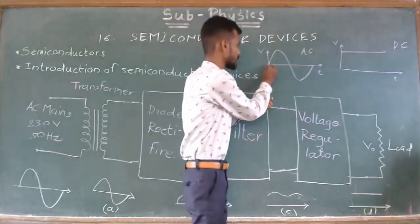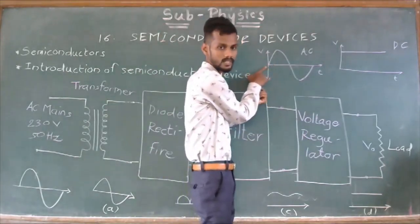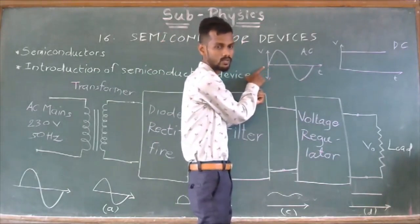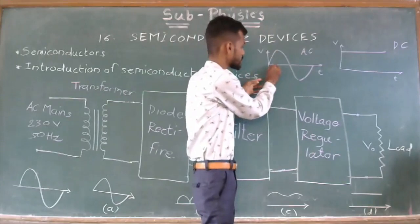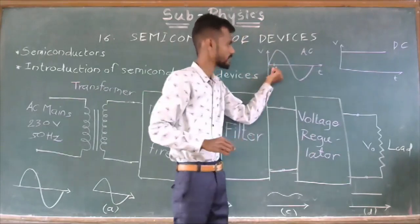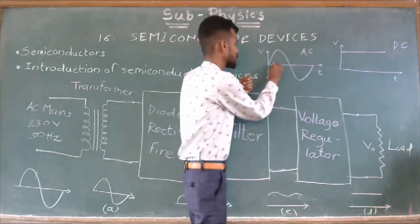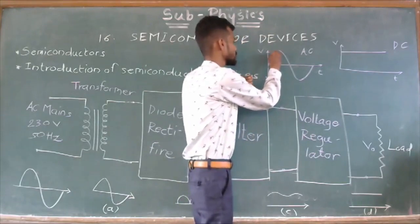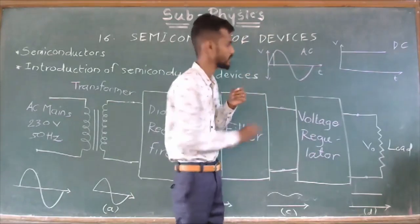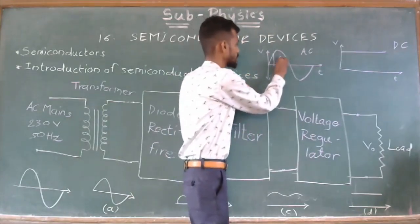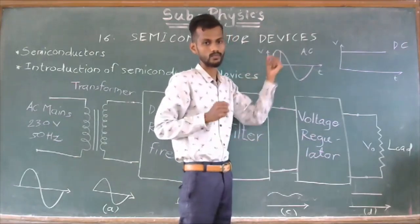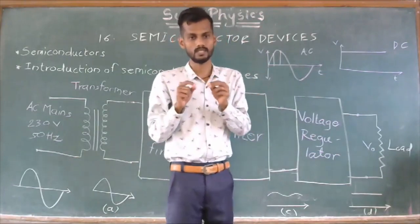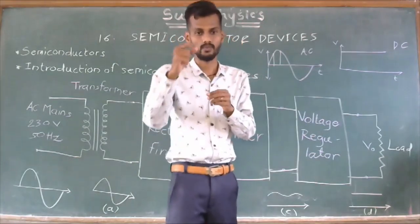By graph we can see that at time T equals 0, voltage is also 0. But, as time changes, voltage also changes. Again, when time changes, voltage also changes. Therefore, in AC voltage, voltage keeps varying.